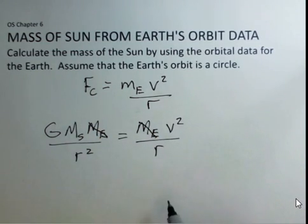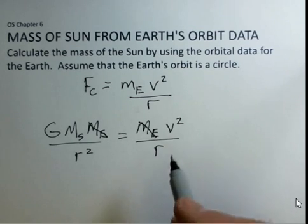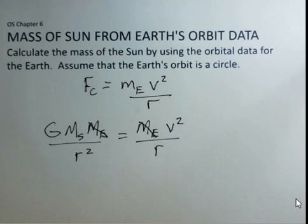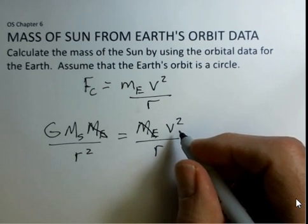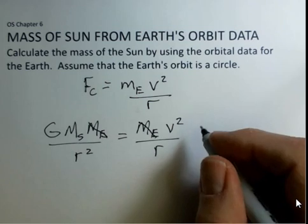We want to know the mass of the Sun, and we can look up various things. Earth's orbit is well known, but I want to go one step further. Instead of looking up the speed of the Earth in its orbit, I want to use the time for one orbit.